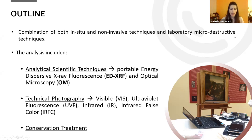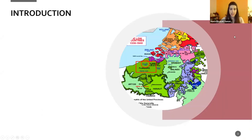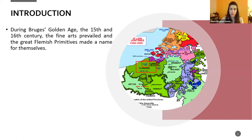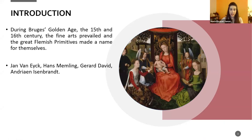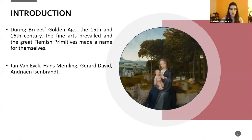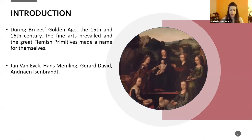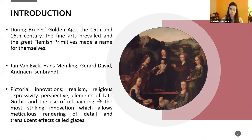In Flanders, in the 15th and 16th century, was the Flemish Golden Age, and the great Flemish Primitives made a name for themselves. The most famous of them were Jan van Eyck, Hans Memling, Gerard David, and Adriaen Isenbrant. Among all the innovations, the most striking was the use of oil in painting.